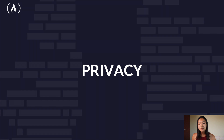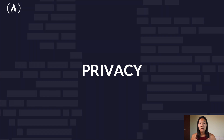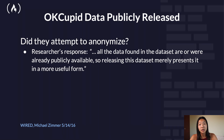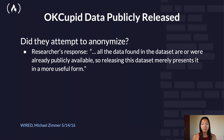Privacy is a basic human need. Privacy is not black and white — it is an exercise of control. Loss of privacy occurs when there's a loss of control over personal data. In 2016, Danish researchers publicly released a dataset of around 70,000 OkCupid users, including their usernames, age, gender, location, what kind of relationships they are interested in, personality traits, and answers to thousands of profiling questions. The researchers' response was that all the data found in the dataset was already publicly available, so releasing it merely presents it in a more useful form.